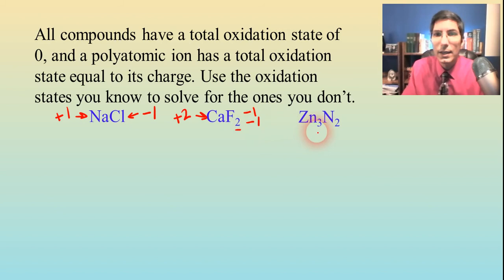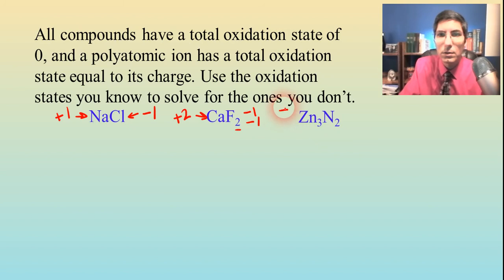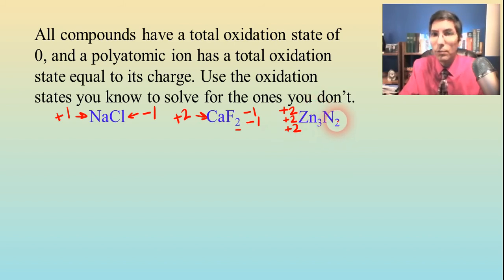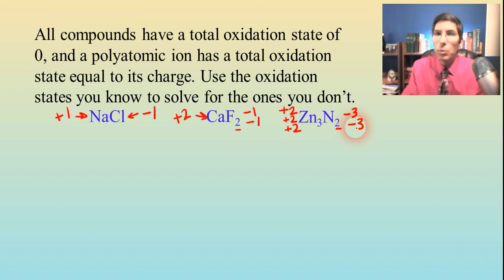And then zinc nitride: zinc is going to be plus two, and we've got three of those — that's a total of plus six. Since this is a neutral compound, the nitrides have to be a total of minus six to even out. We divide that by two and you get negative three for each. So hopefully you can see that oxidation state is like solving a puzzle — use the ones you know to solve for the ones you don't know.